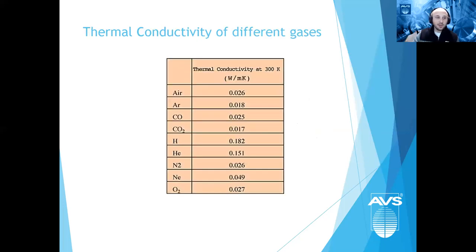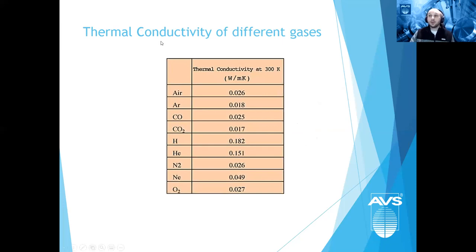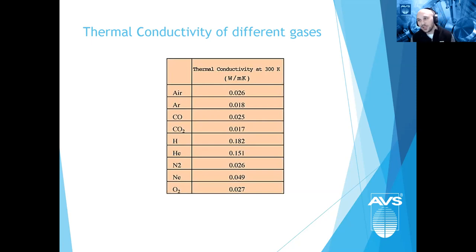Because different gases have different thermal conductivities, gas-dependent gauges calibrated in nitrogen will give skewed readings for other gases. Standard gases like nitrogen, air, carbon monoxide, or oxygen are reasonably close, but other gases will throw off the measurement and must be accounted for.